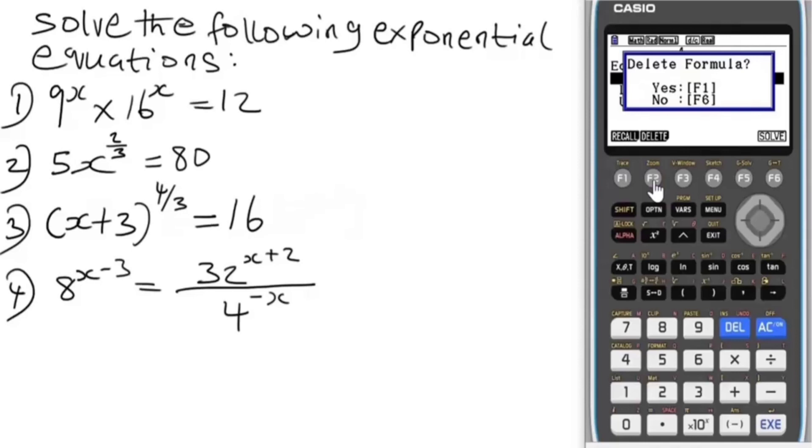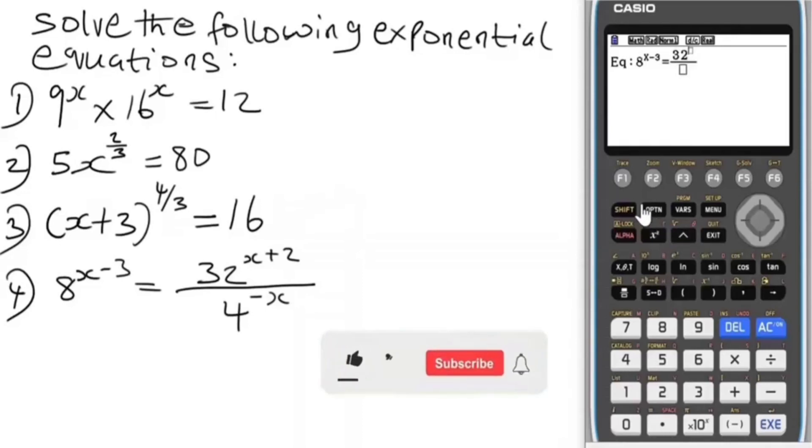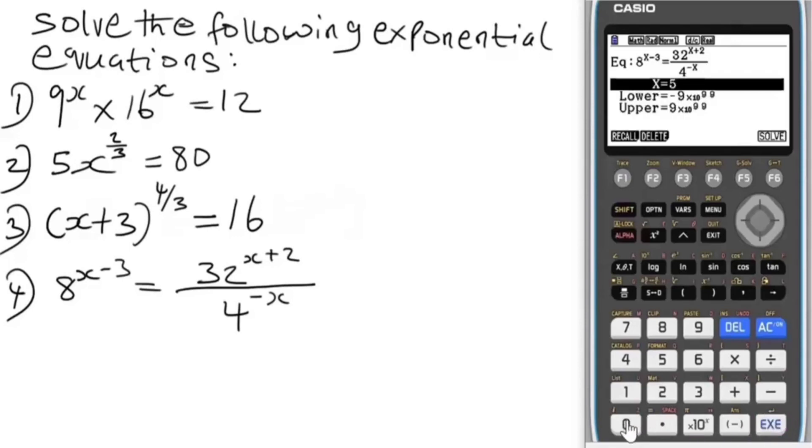Last one, delete everything here. We have 8 to the power of x minus 3 equals 3e^(2x) over 4 to the power minus x. Let's input this function: 8 to the power x minus 3, alpha x, plus 2 over 4 to the power minus x. Let's press.